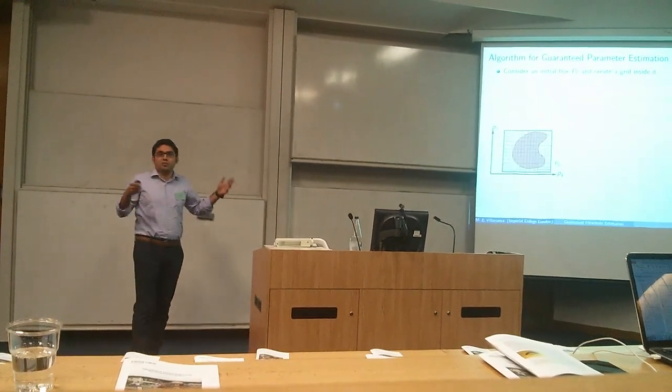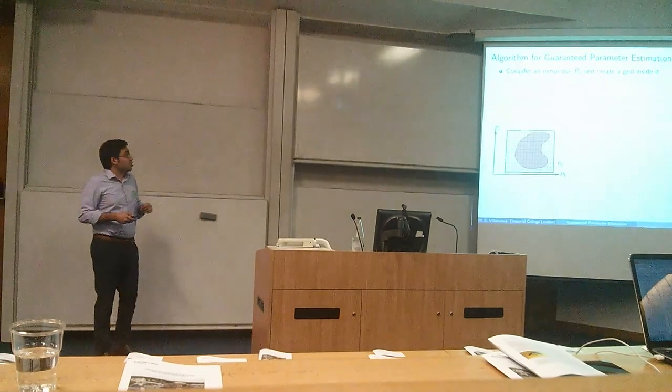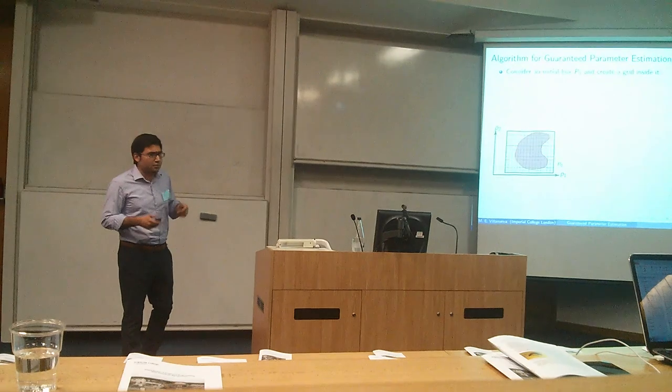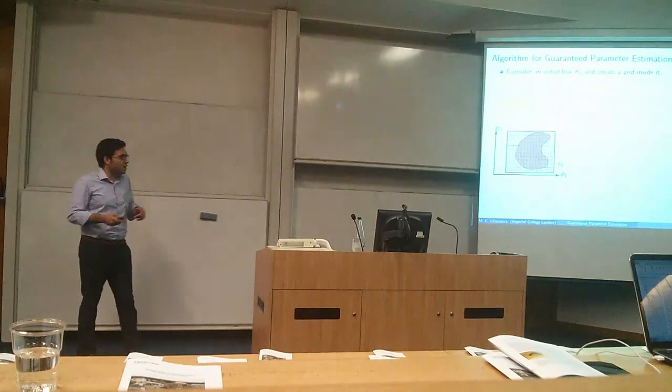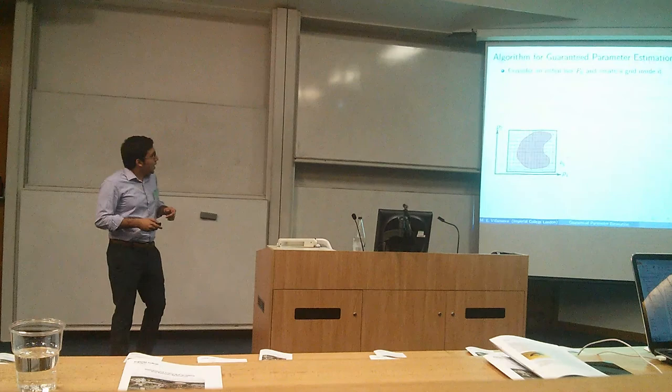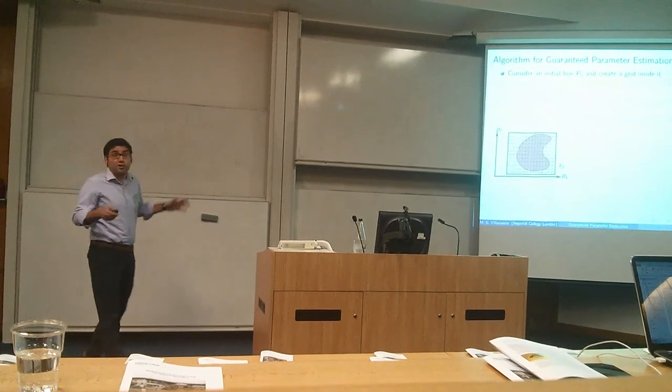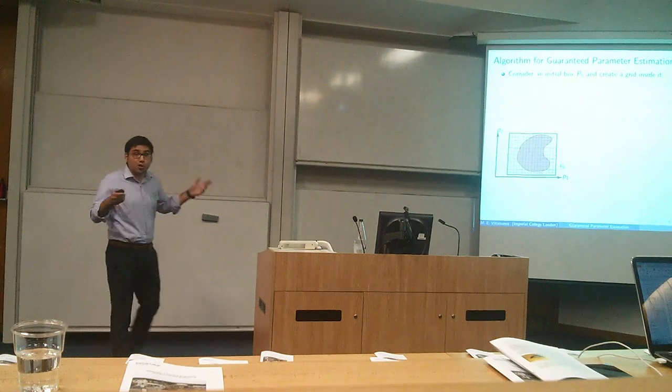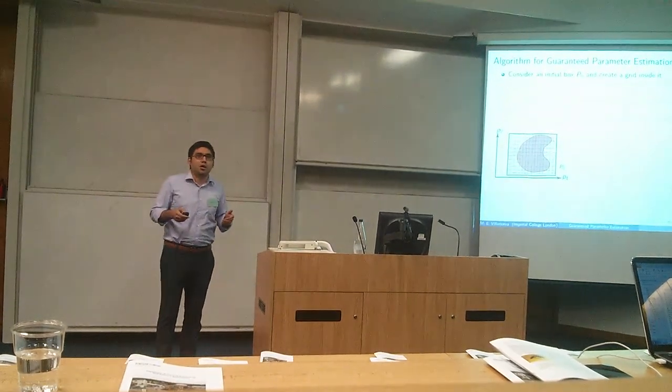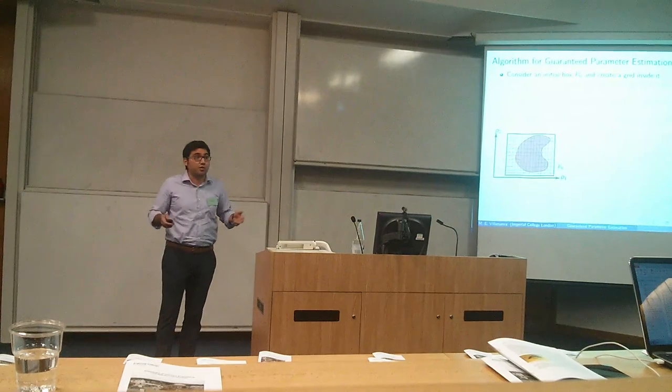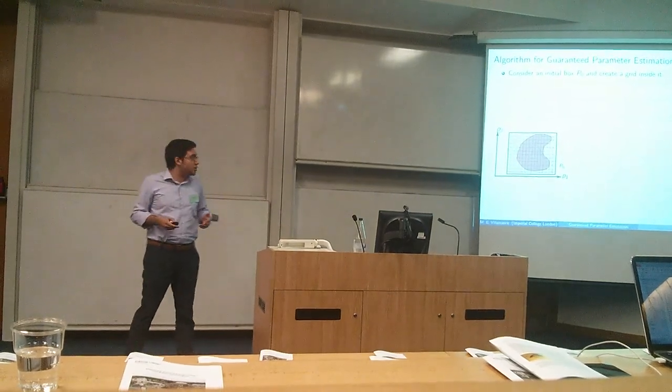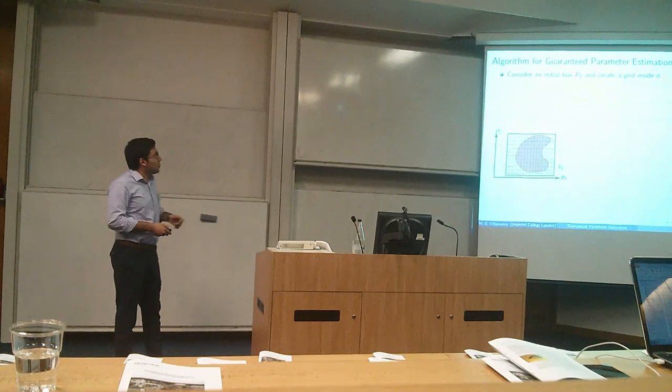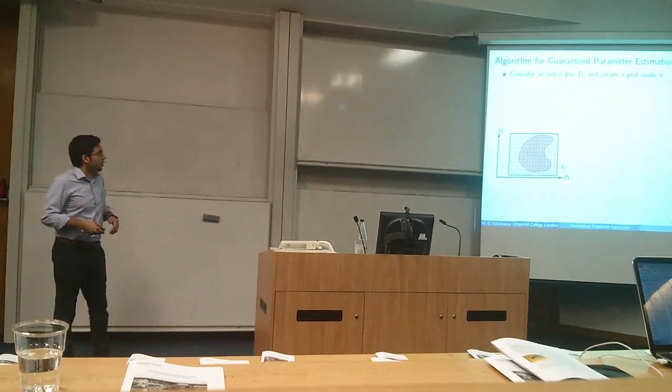But how do we actually over-approximate this problem? This is an algorithm that was given around 1993 by Luc Joland and Eric Walters. And the algorithm, a simplified version of this algorithm, goes like this. We take an initial box that we can construct from some physical information, maybe, regarding my parameters. It's an initial box that I know that contains my parameters. And we create a grid inside this box.